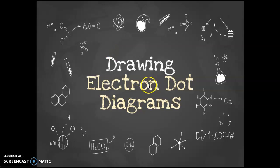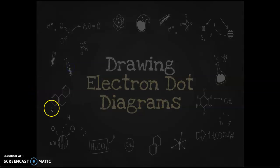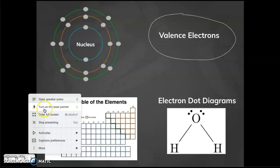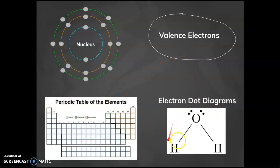All righty, so we're going to be drawing electron dot diagrams, and they're kind of fun to draw. Before we get to that stage, there are four steps in order to really understand what these mean.